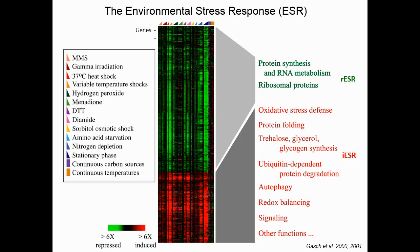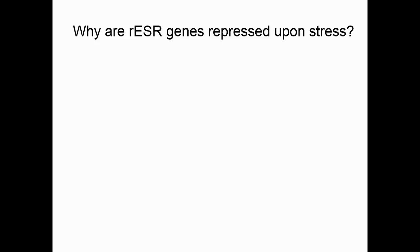The other group is the repressed ESR, or rESR. It contains about 600 genes that are ribosomal proteins or ribosomal biogenesis proteins. These genes are highly transcribed and translated under optimal growth conditions. It is intuitive to understand why, upon stress, cells want to induce the iESR genes due to their functionality. The question becomes: why do cells want to repress the rESR genes upon stress?